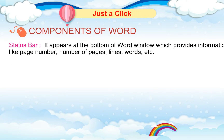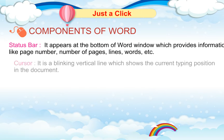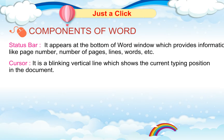Status Bar: It appears at the bottom of the Word window and provides information like page number, number of pages, lines, words, etc. Cursor: It is a blinking vertical line which shows the current typing position in the document.